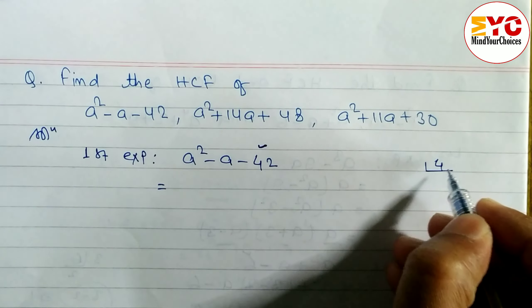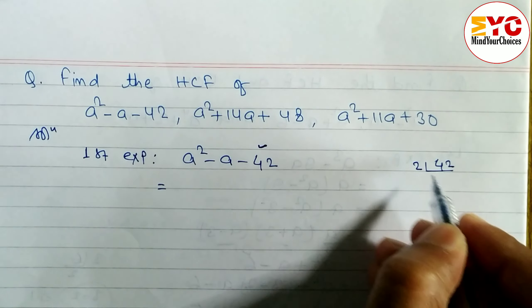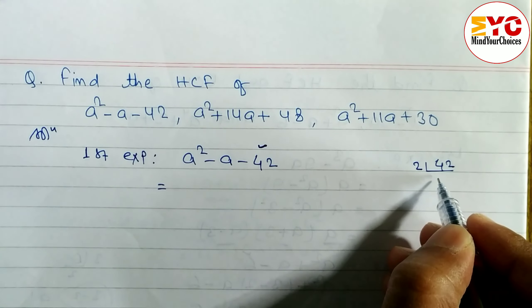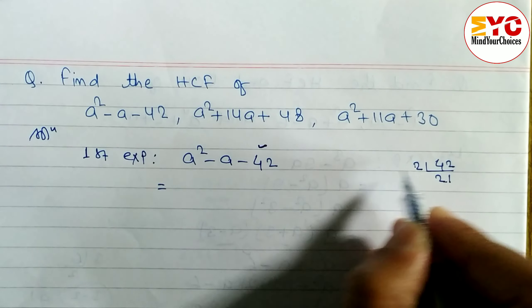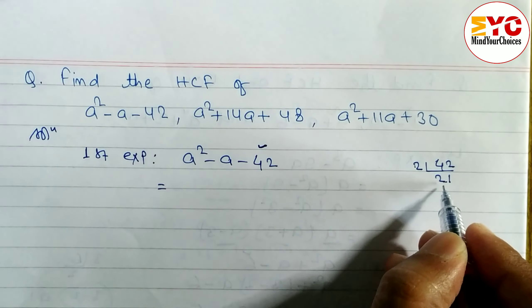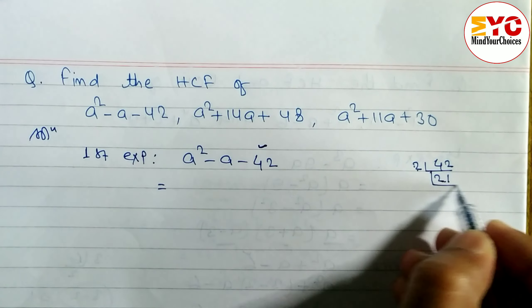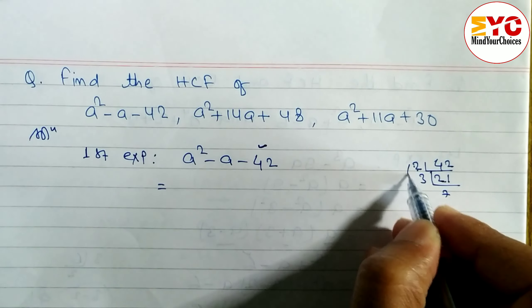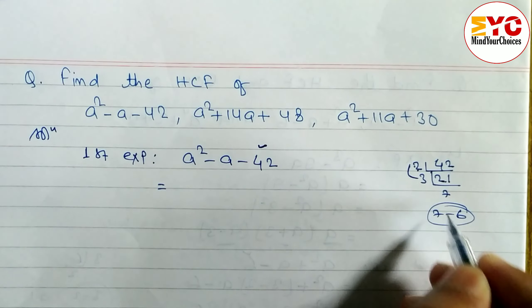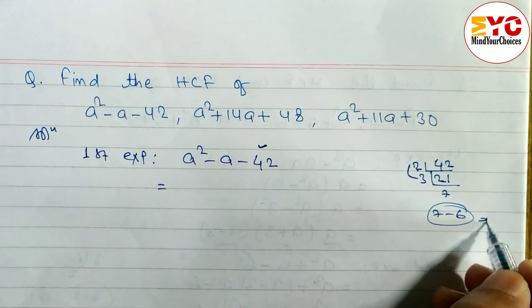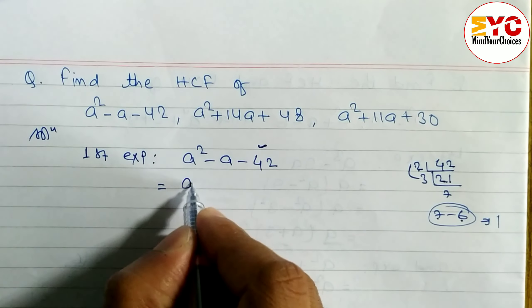Look at here how to find out factors. We write 42 and start dividing: 2 twos are 4, 2 ones are 2 — subtracting gives 1? No. Next: 3 sevens are 21, 3 twos are 6, and 7 minus 6 equals 1. Also 7 times 6 are 42.